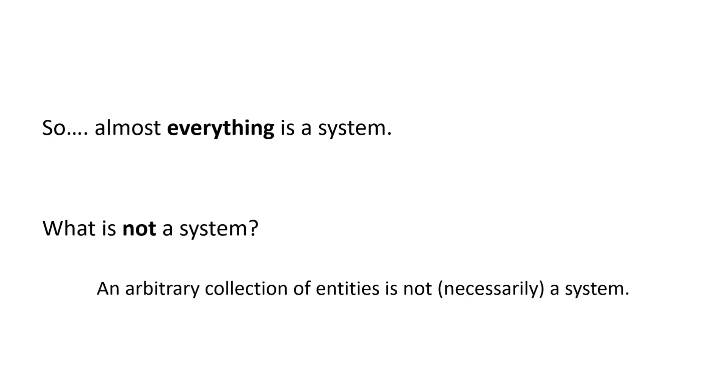I say here that an arbitrary collection of entities is not necessarily a system. I have to put necessarily in there because it could be a system. If I just pick some arbitrary entities, it might be a system. But the idea here is that by just picking some entities out arbitrarily without any thought to how they might interact or be related to each other, you might, you're probably not going to get a system. You might have picked out a couple of subsystems, but they don't have any logical way they fit together. So I'll give you an example. I'll just pick some arbitrary elements here.